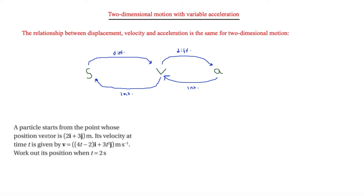The first question says that a particle starts from the point whose position vector is 2i + 3j. Its velocity at time t is given by v = (4t − 2)i + 3t²j meters per second. We need to work out its position when t = 2s. This requires going from velocity to displacement, so we are going to have to integrate.